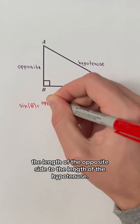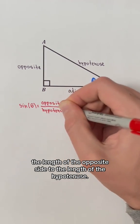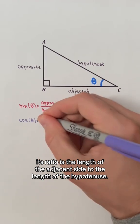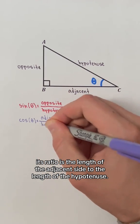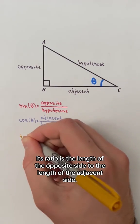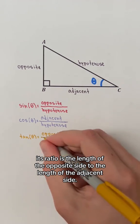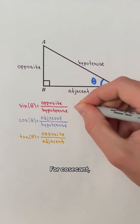For sine, its ratio is the length of the opposite side to the length of the hypotenuse. For cosine, its ratio is the length of the adjacent side to the length of the hypotenuse. For tangent, its ratio is the length of the opposite side to the length of the adjacent side.